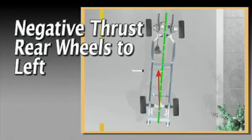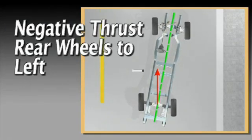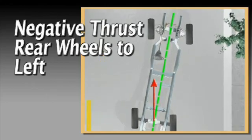Negative thrust, which means the rear wheels are pointed to the left, will cause dog tracking in this manner.